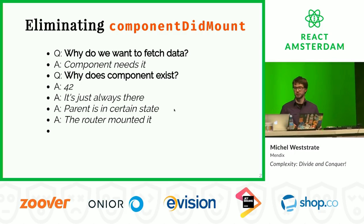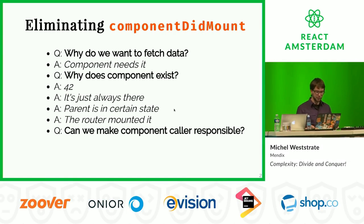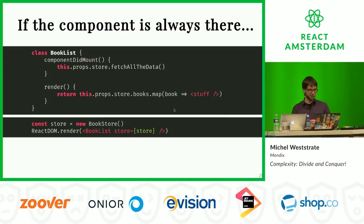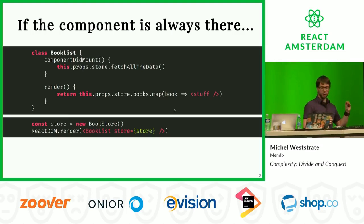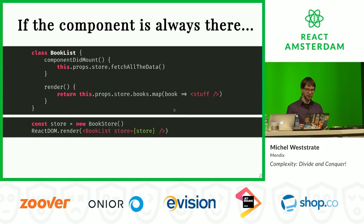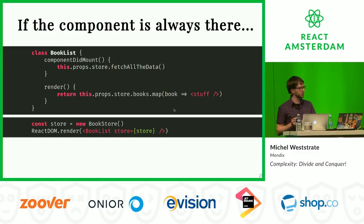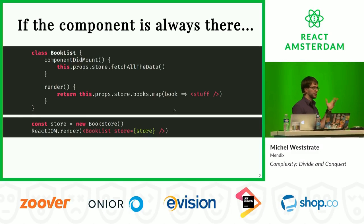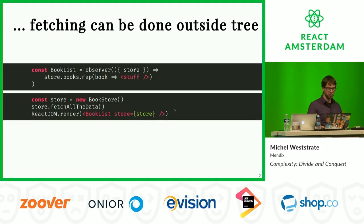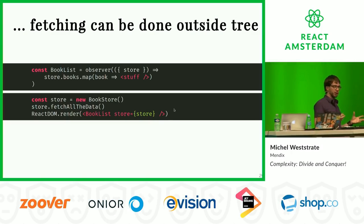To lift data fetching out of the component, we have to make whoever causes the component to exist take responsibility for the fetching. The simplest case is when the component always exists: if my book list component fetches data during mounting, instead I can just fetch the data when the application is created, completely outside the component. We can do that because with MobX, components can reactively react to state that lives outside the component.